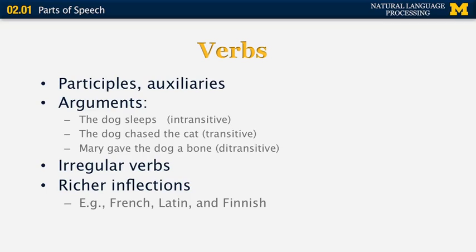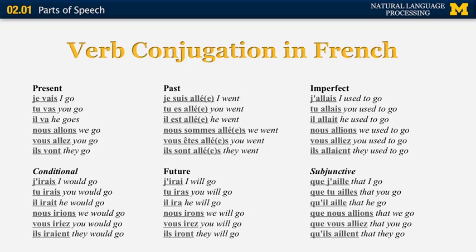What has been described so far applies mostly to English. Other languages have much richer inflections. French and Latin, for example, have more than 100 different forms of certain verbs, and Finnish can have more than 20 different forms of the same noun. An example from French shows 36 different forms of the verb 'to go' on a single slide alone, with even more forms depending on tense, mood, and whether it's conditional or subjunctive.